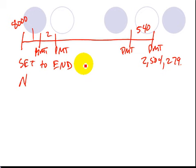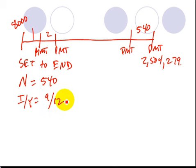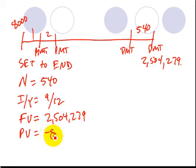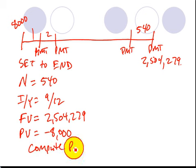All right, so we want to set this to the end, meaning set it to calculate ordinary annuities. N is going to be 540. I slash Y is going to be the same as it was before, which is 9 over 12. Future value, what's future value going to be? That's what we need to accumulate, so that's going to be 2,504,279. And the present value has got to be the opposite sign. It's going to be 8,000 because we're going to put in 8,000 bucks and then withdraw 2,504,279. And we want to compute the payment.